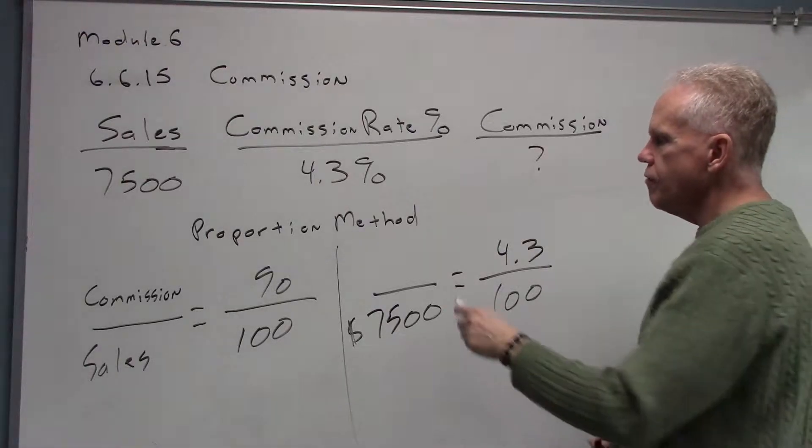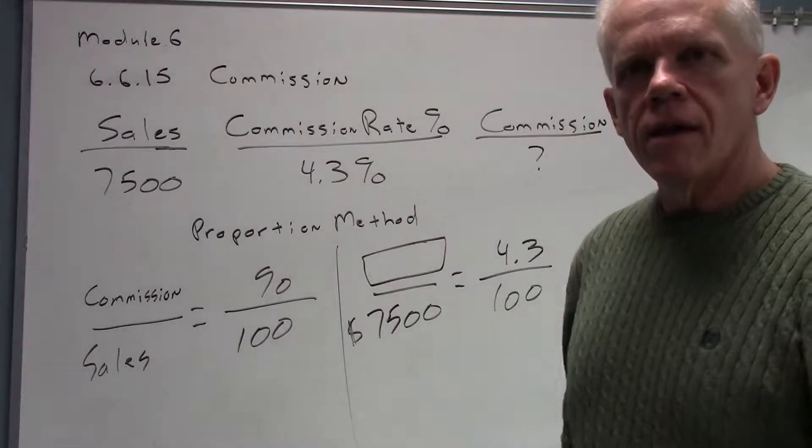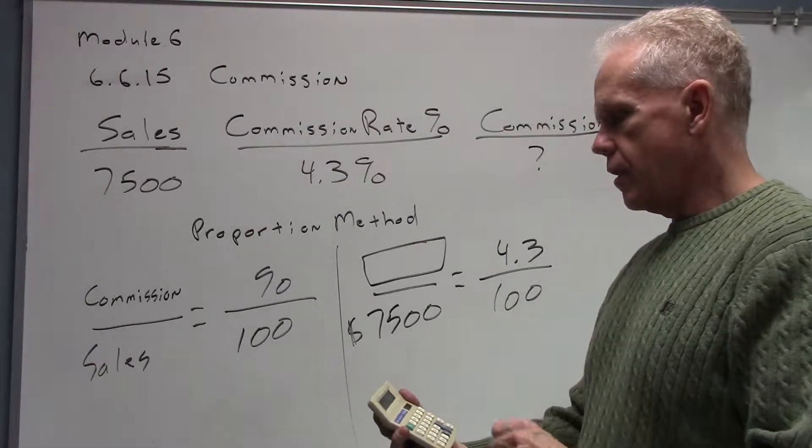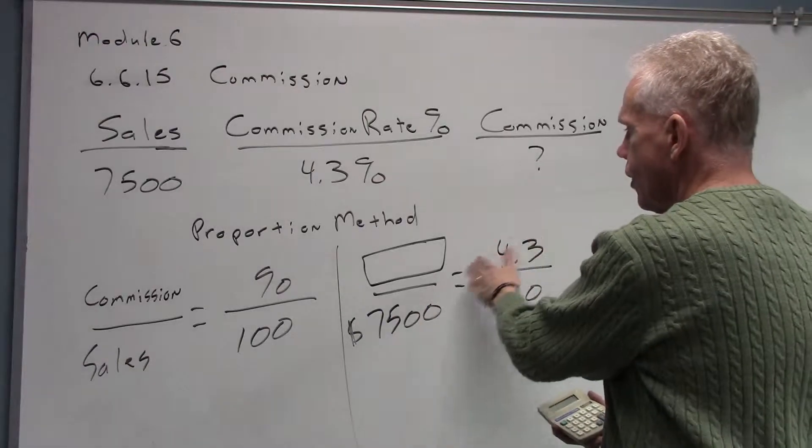Now we're trying to figure out how much commission will they earn for that. Let me find my antique calculator and see what we can do with this. You remember the proportion model, how we solved that. We're going to cross multiply.